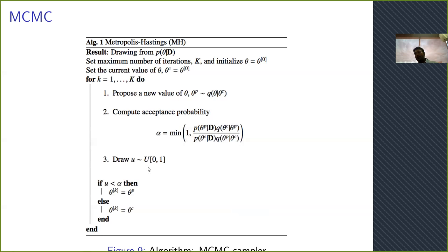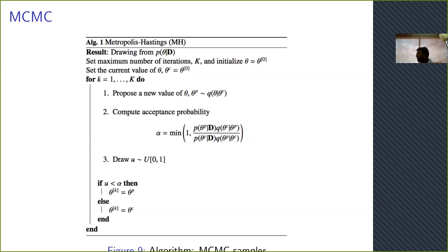You accept with a certain probability, drawing from a uniform distribution, which takes into account getting out of local minima. If it is accepted, the current set of decision variables becomes part of the chain. If it is not accepted, then whatever was the last accepted value remains part of the chain. You collect the history, write it to a file, and from there calculate your histogram.